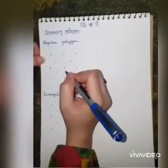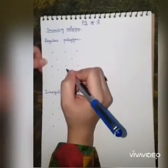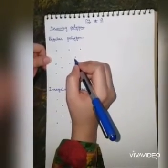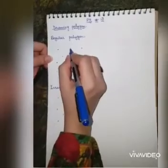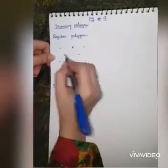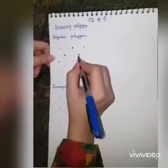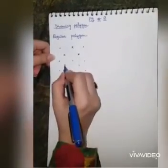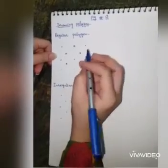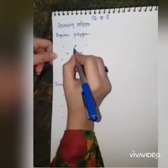I have marked five vertices of the pentagon on the dots: one, two, three, four, five. Now I will join them.